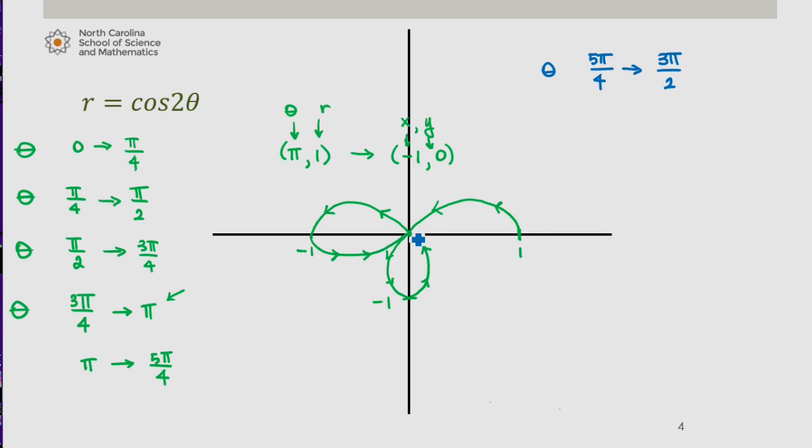So we range from 0 when theta is 3 pi over 2. I obtain cosine of 2 times that. That gives me negative 1. So at 3 pi over 2 as my angle measure, the r value is negative 1, which brings me up here.